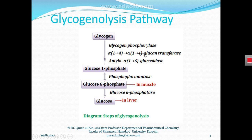The enzymes alpha-1,4-glucan transferase and amylo-alpha-1,6-glucosidase also work on the glycogen molecule. Glycogen is converted into glucose-1-phosphate, and then glucose-1-phosphate is converted into glucose-6-phosphate by the enzyme phosphoglucomutase. This conversion of glucose-1-phosphate to glucose-6-phosphate happens in the muscles.